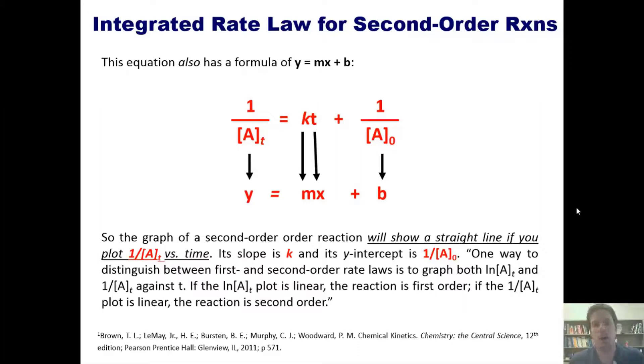According to our book, one way to distinguish between a first and second order rate law is to graph both ln of A and one over A against t. If the ln of A plot is linear, then the reaction is first order. If the one over A plot is linear, then the reaction is second order. So that's really the distinction.